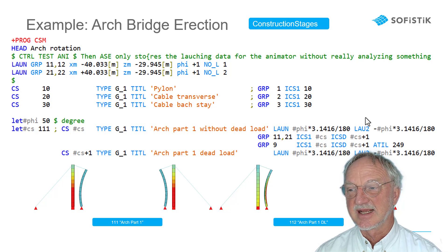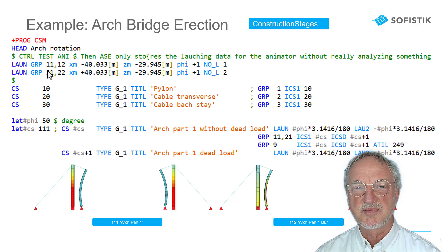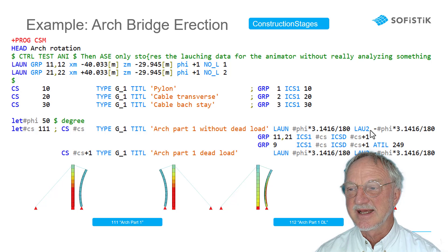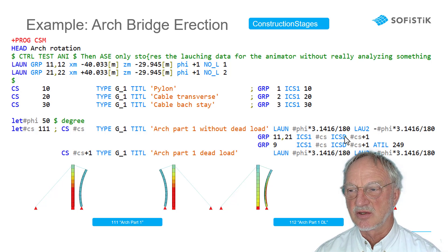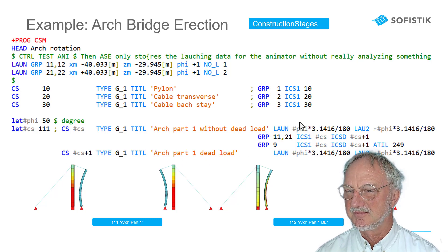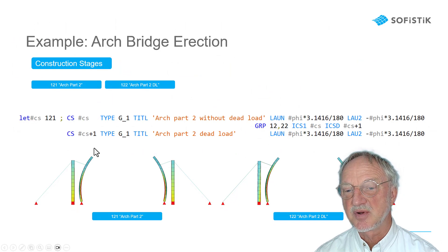And the second launching, that is launching 2 for group number 21, that is this group, will get a negative rotation. And we activate our groups first without dead load. And then in the next step we activate the dead load of these parts.